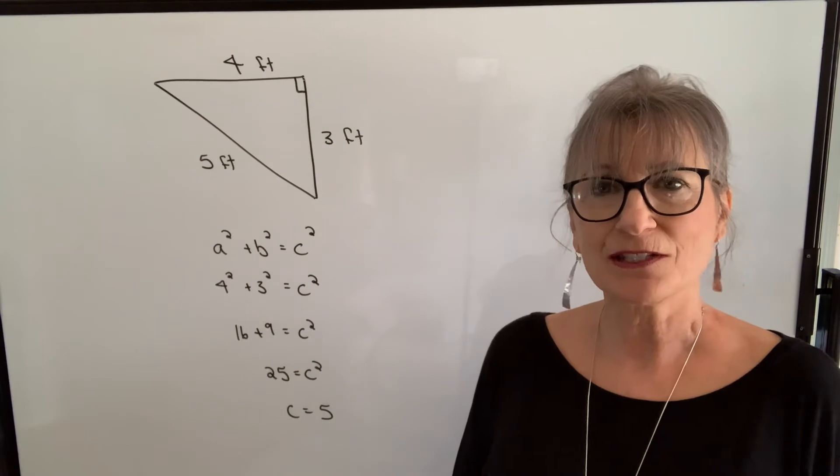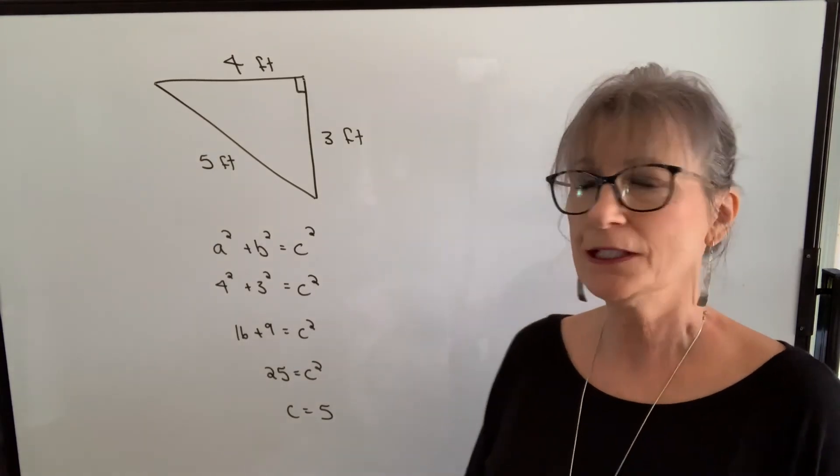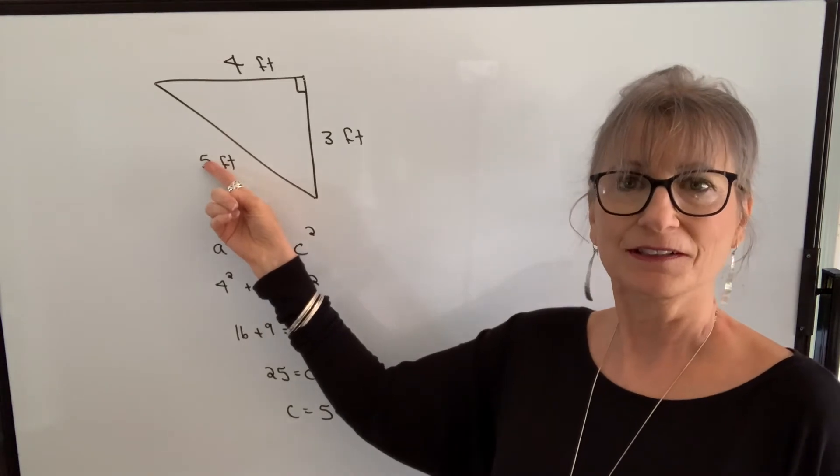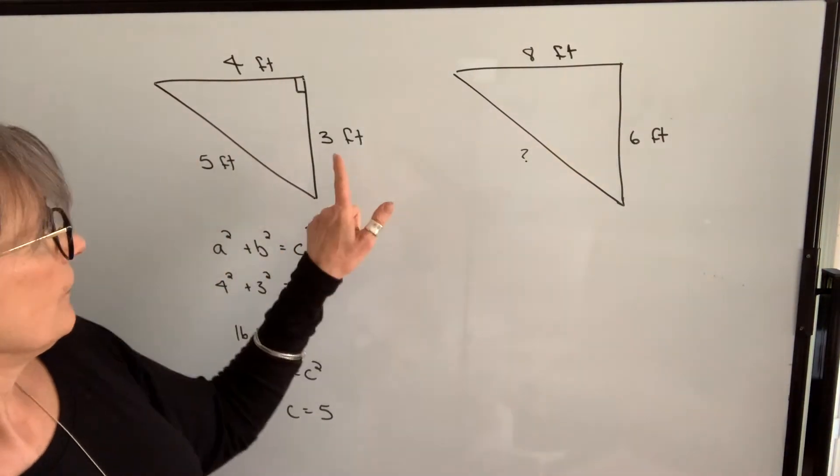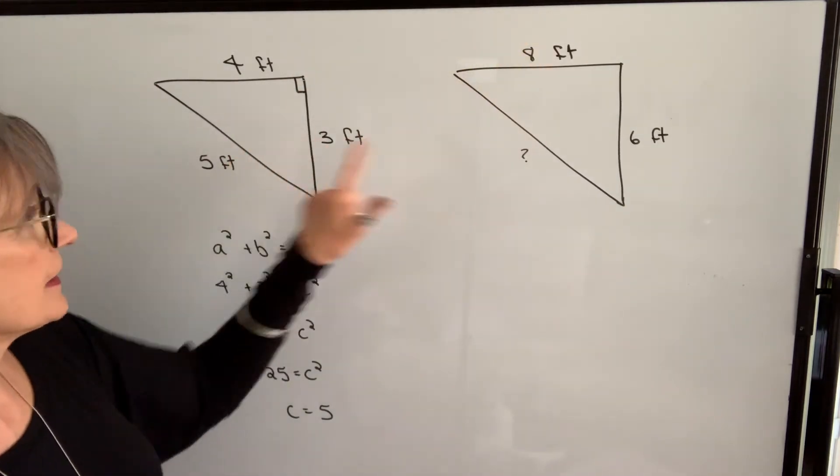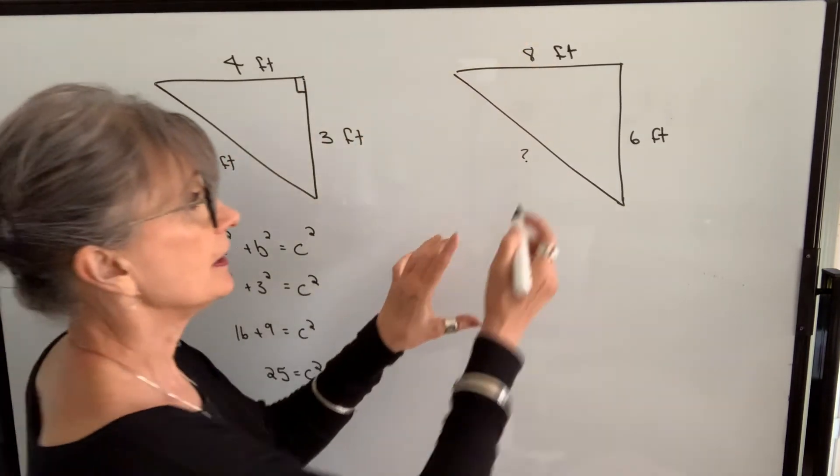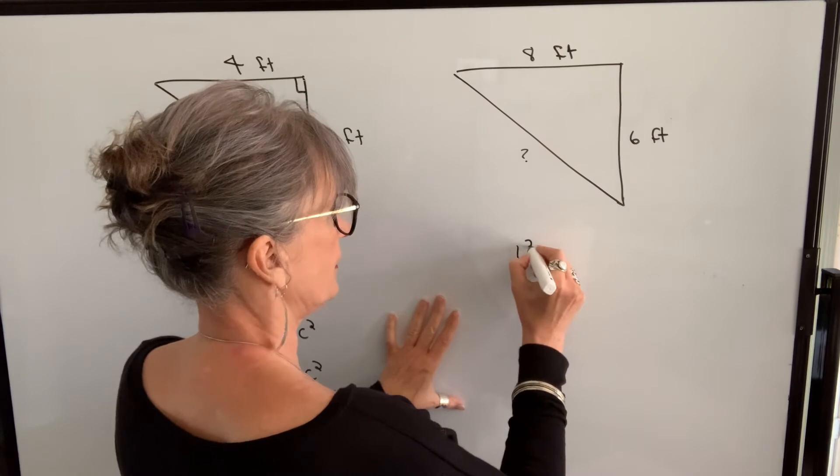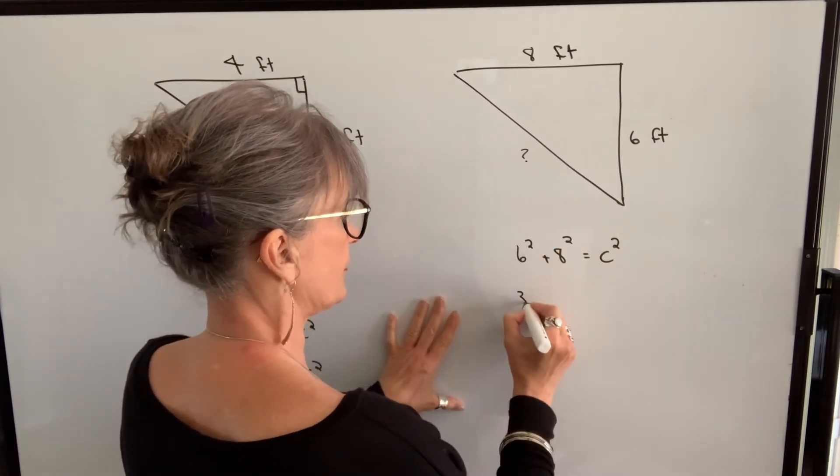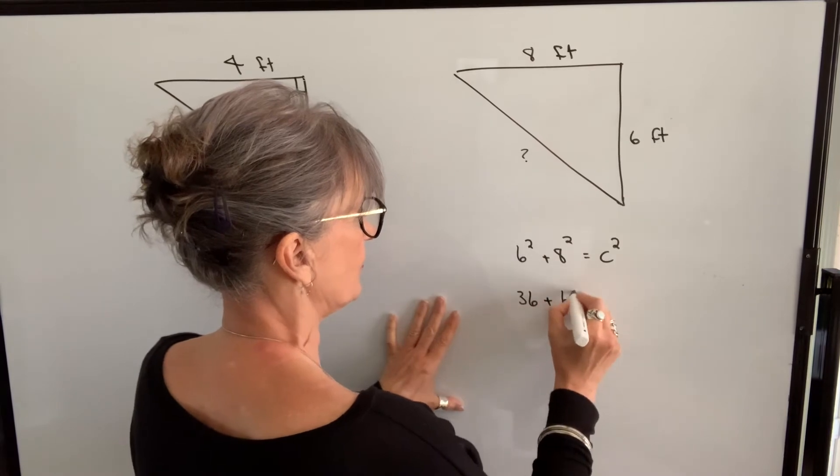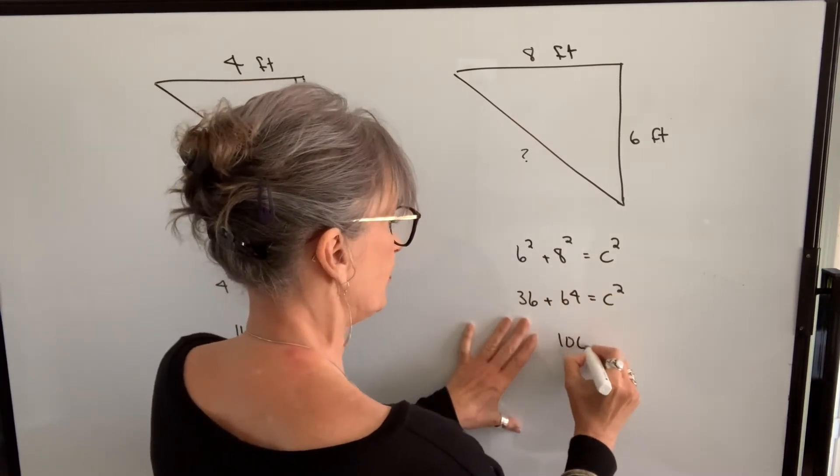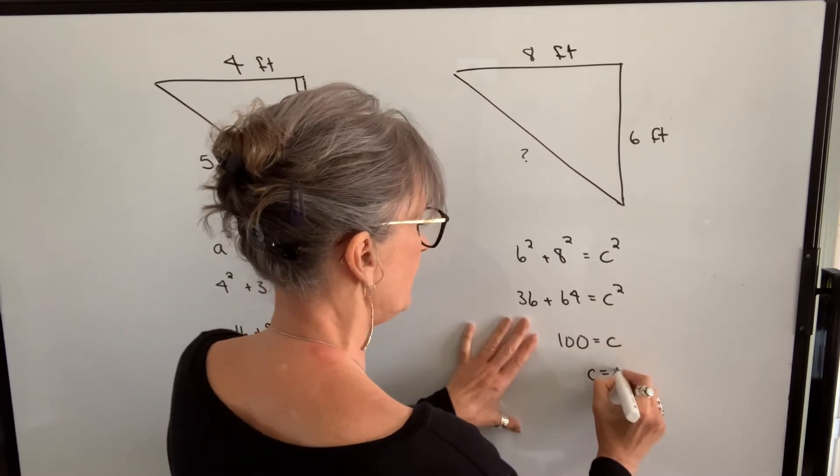Another useful piece of information is that you could double all of these numbers and it would also work. For example, if I doubled this length and this length, this length actually would be double as well. We can check that. 6 squared plus 8 squared equals c squared. So 6 squared is 36. 8 squared is 64. 36 plus 64 is 100. So c would equal 10 feet.